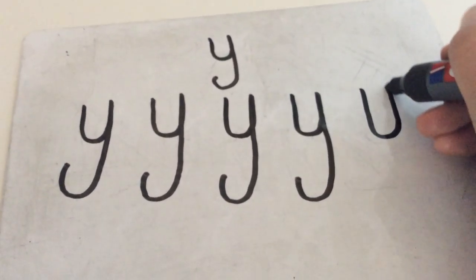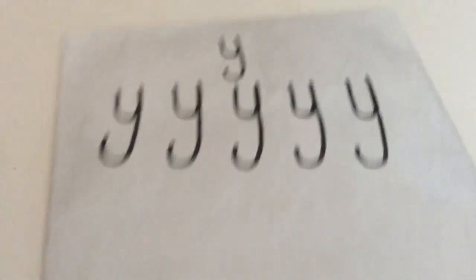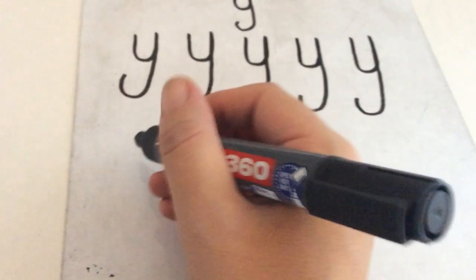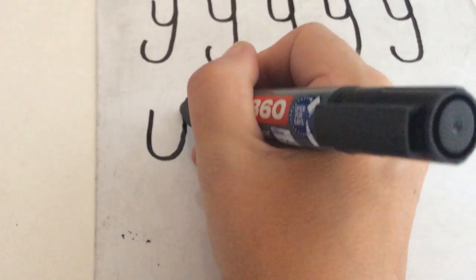Down, curve round and up, down and give him a tail. Right, next line, watching carefully because it's your go in a sec. So, down, curve round and up, down, give him a tail.